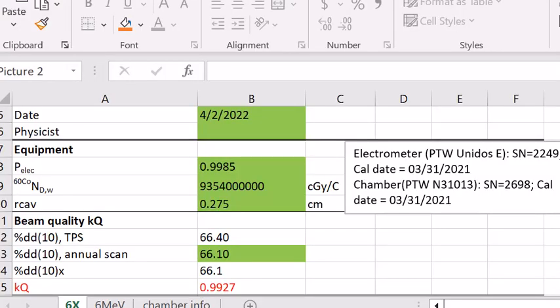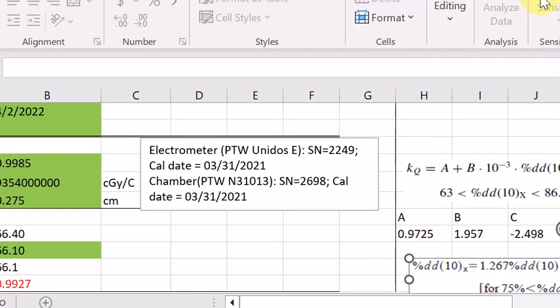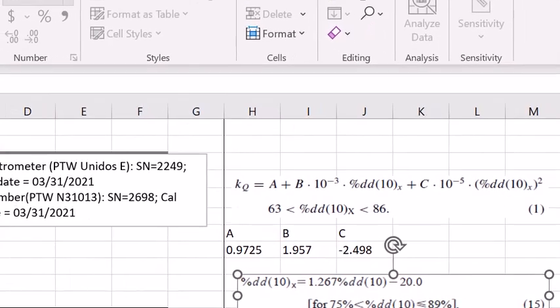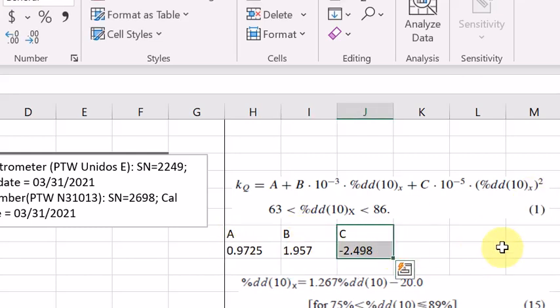In our TG51 annual, we actually use the addendum data. So this is actually the equation. Once we have the PDD at 10, we can use this equation instead of the tabulated data to obtain the KQ factor. The A, B, C values are from the TG51 addendum. So once we have the PDD at 10, we just plug into this equation using these three factors for A, B, C, and we can get our KQ value.